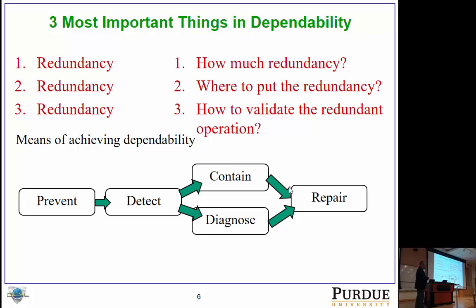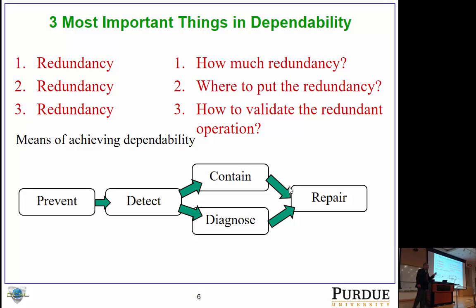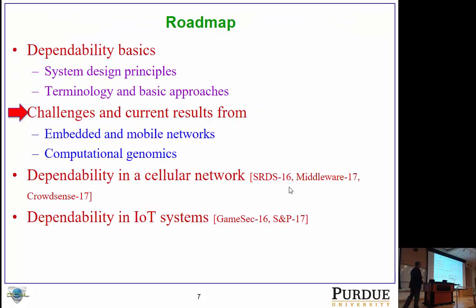The means of achieving dependability is a multi-stage process: you try to prevent problems before they occur, but when you cannot, you detect an error as soon as it happens before it becomes a user-visible failure. Once you detect it, you temporarily contain it so the infection does not spread to other components, then you diagnose or localize which component is causing the problem, and finally you automatically repair it to get the component back into an operational state.